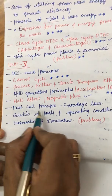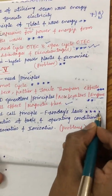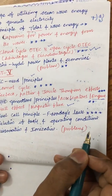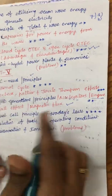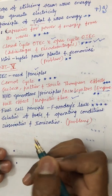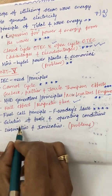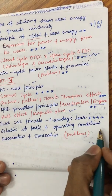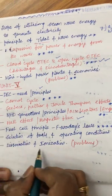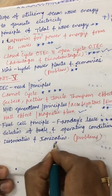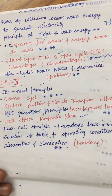Fuel cells, their principles, and Faraday's law have been asked many times. Students preparing Unit 5 need to concentrate and work out all these questions. The selection of fuels and operating conditions, as well as differences between dissociation and ionization, are asked several times.